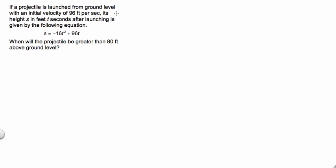So here's our word problem. If a projectile is launched from ground level with an initial velocity of 96 feet per second, its height, s in feet, t seconds after launching, is given by the following equation. So when will the projectile be greater than 80 feet above ground level?